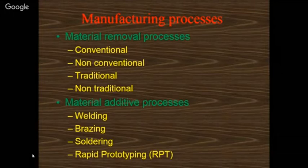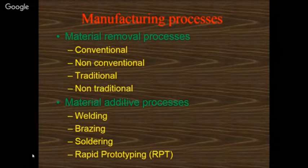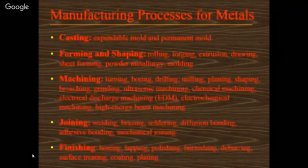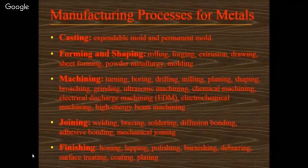Material removal processes include various conventional machining, non-conventional machining, traditional, and non-traditional methods. Material additive processes include welding, brazing, and soldering. The latest topic is rapid prototyping, which is one kind of material additive process. Other manufacturing processes of metals are casting and forming, machining, joining, and finishing.